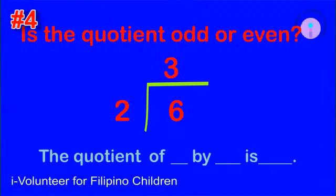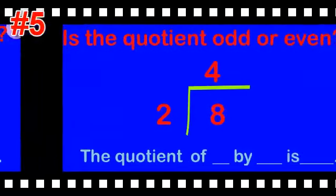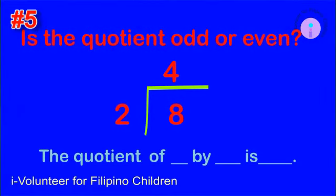Item number four: is the quotient odd or even? The quotient of six by two is odd. Item number five: the quotient of eight by two is even.